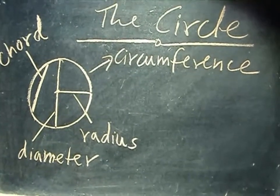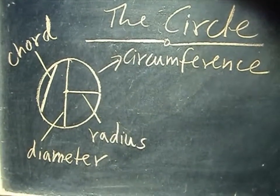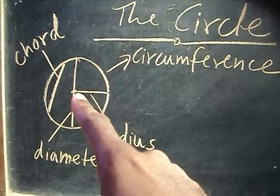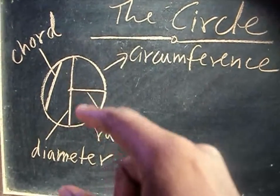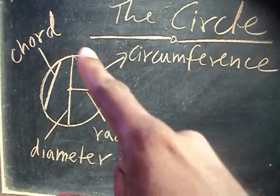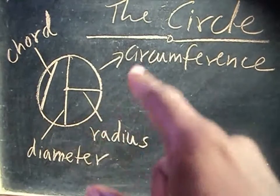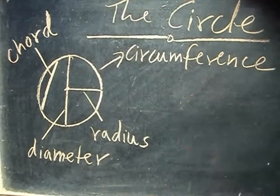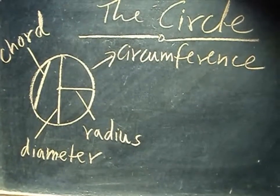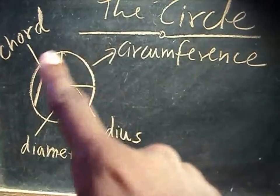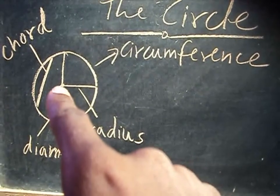The circle is another example of a plane figure. Now we have several parts of the circle. The dot is actually the center of the circle. Around the circle is what is called the circumference. The circumference is also what you call the perimeter of the circle — very important, please know that.